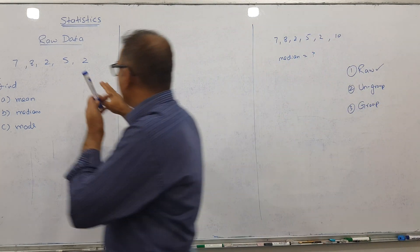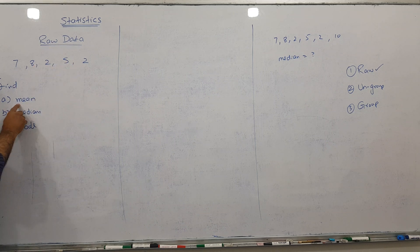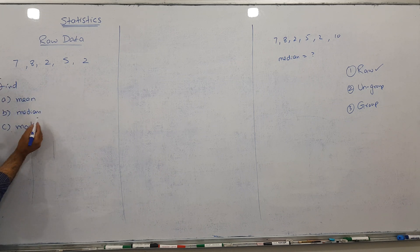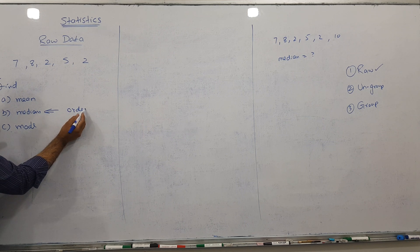We have an example here: 7, 8, 2, 5, 2. We have to find mean, median, and mode. The data is not in order, but especially for median, data must be in order.